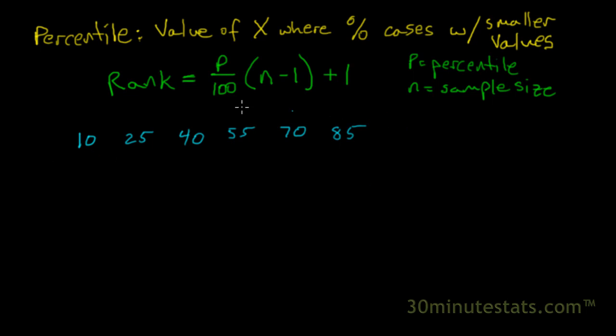We've got these six values here, from 10 to 85, that represent our distribution, and they're rank ordered from lowest to highest. Let's say we want to find the 30th percentile.